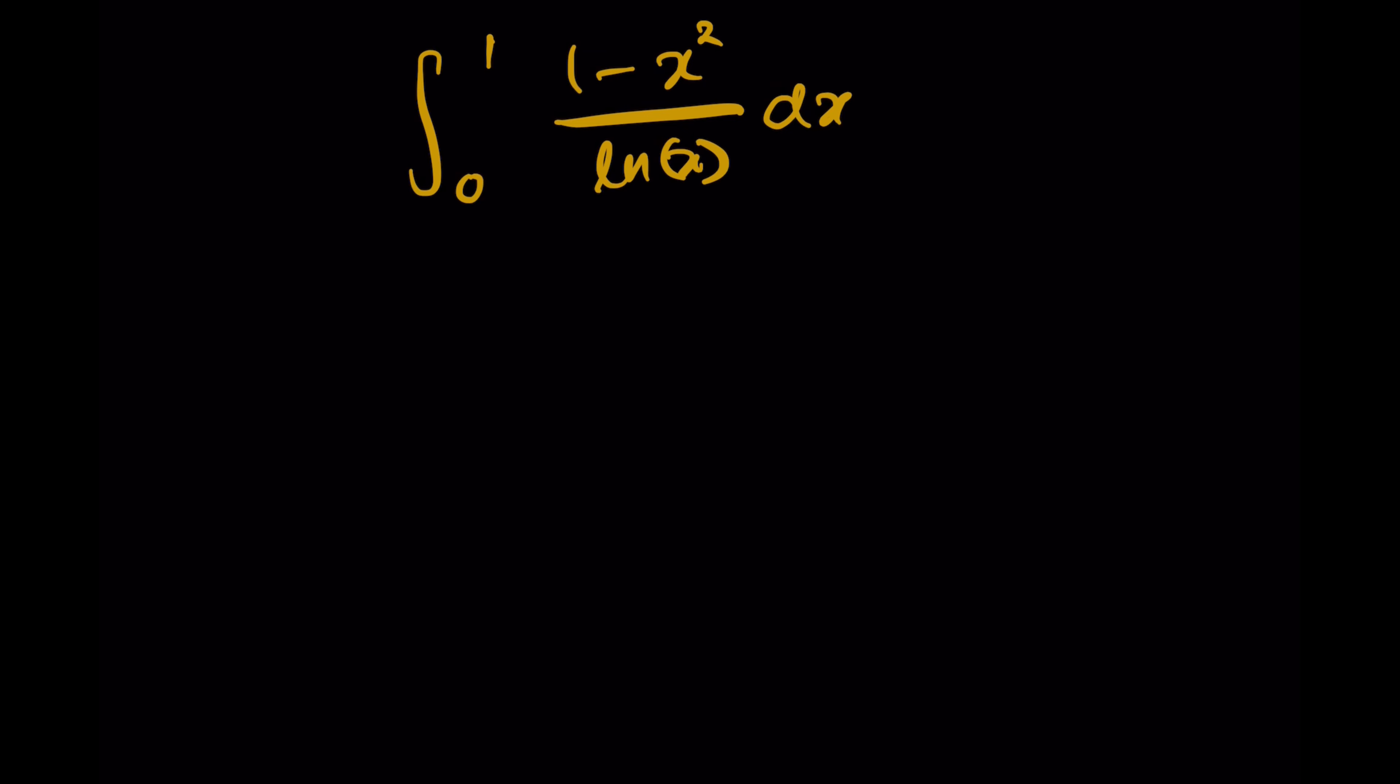Instead, we define a new function F, where F stands for Feynman, and introduce a new variable t. This equals the integration from 0 to 1 of (1 minus x to the power t) over ln(x) dx.